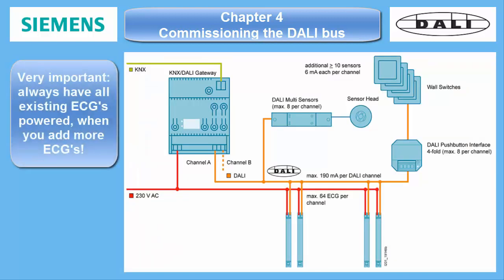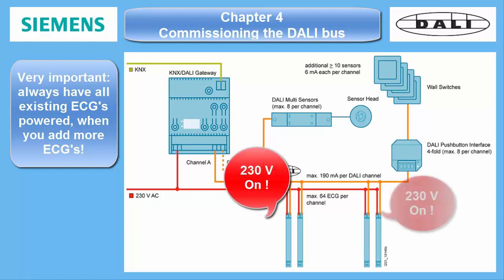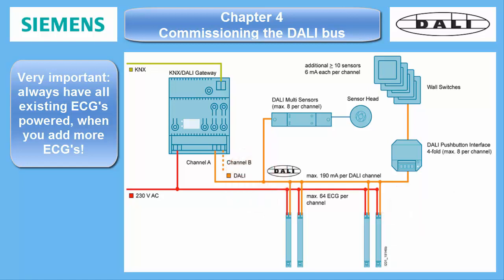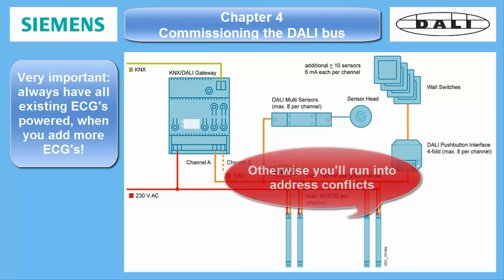Very important! If you aren't able to perform the commissioning for a DALI line in one run, always make sure that previously commissioned ballasts are powered when you extend the line later. Otherwise, the discovery algorithm will reassign the short addresses of the not-found devices to the new ballasts, causing colliding short addresses.